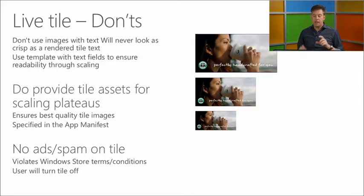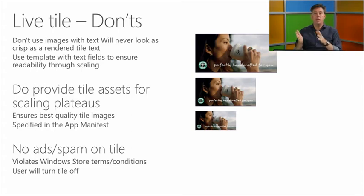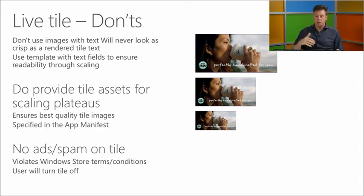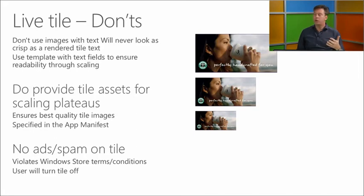What you should not do is put text in an image and use that as a tile, because of scaling and different DPIs — text in an image won't be readable at other resolutions. You can provide tile assets for the different scale plateaus — 100, 140, 180 percent — so it's very crisp and clear. And don't use ads or spam in the tile; that violates Windows Store conditions and doesn't make sense to users.